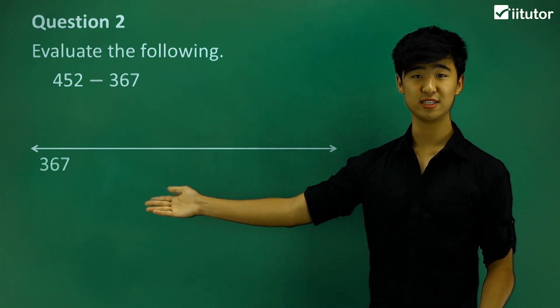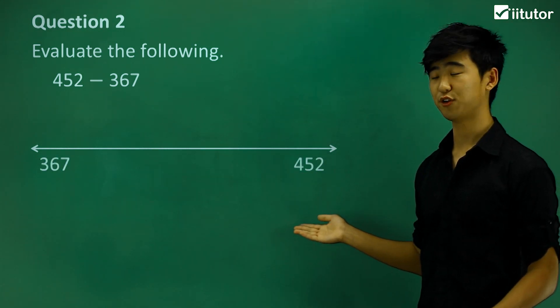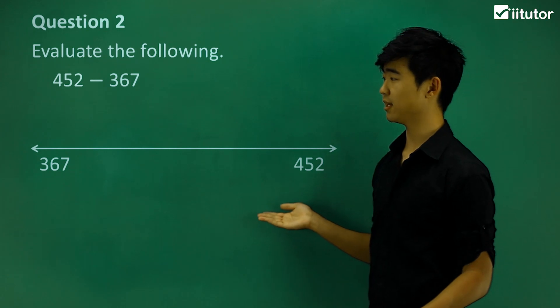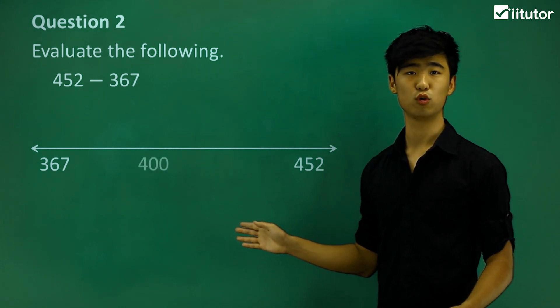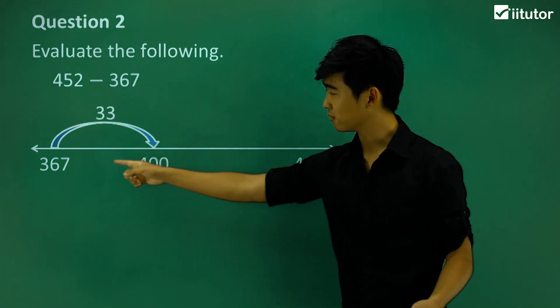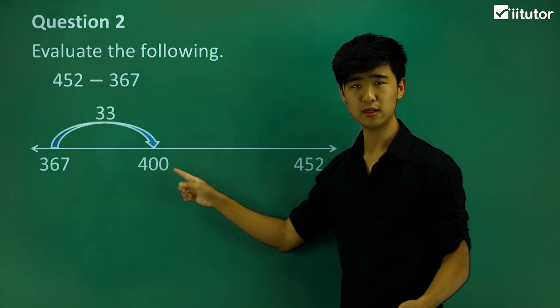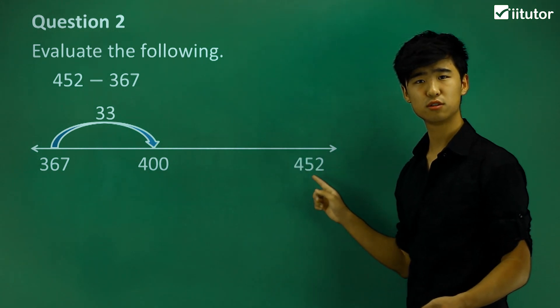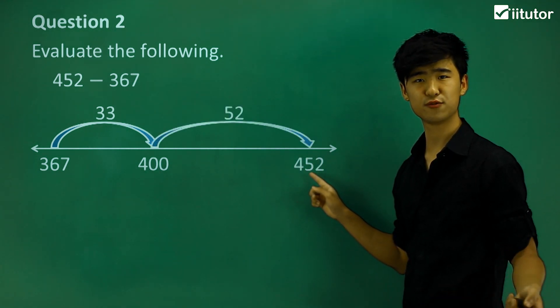Say 367 over there, 452 over here. Now let's see which numbers we can round to. We have 400. From 367 to 400 is 33. From 400 to 452 is 52.